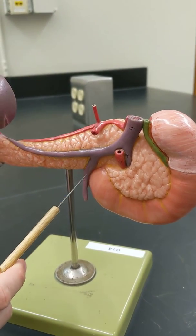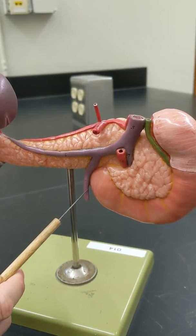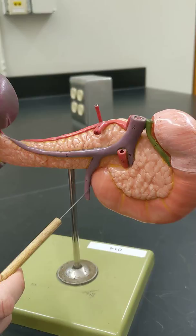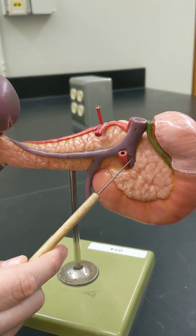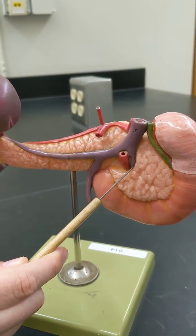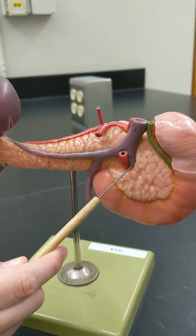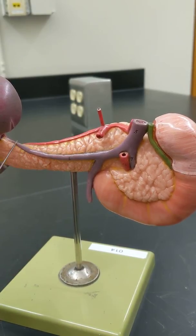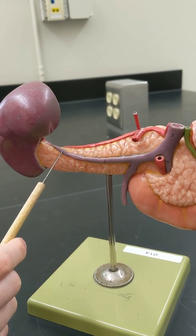Now, right here, we have the inferior mesenteric vein. And notice there's another one right over here that's kind of tucked into the pancreas. That is the superior mesenteric vein. And then this one going over to the spleen is the splenic vein.